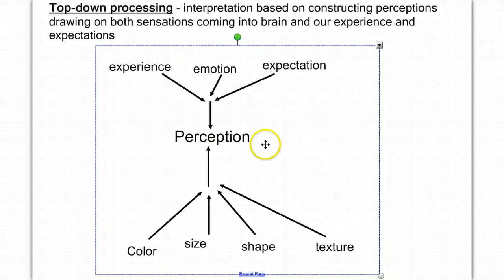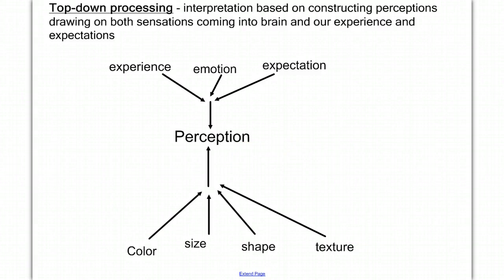What this should make really clear is that perception doesn't always equal reality. In class, we'll talk more, give more examples of the difference between top-down and bottom-up processing. We'll give some examples, and we'll use our reading from the man who mistook his wife for a hat to give us some concrete examples.